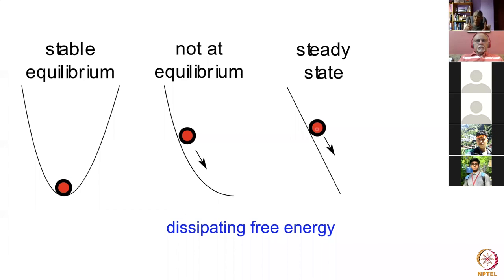For example, if we have a bar with a hot end and a cold end and a constant temperature gradient, then at any location within that bar you will see the same temperature even though heat is flowing. So this is a subject which is between kinetics and thermodynamics.